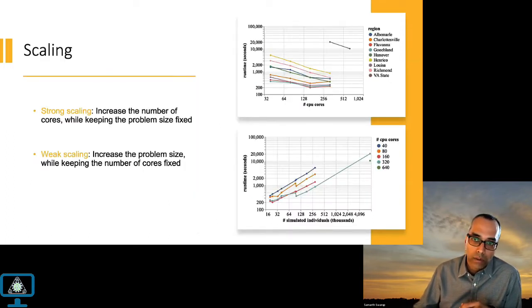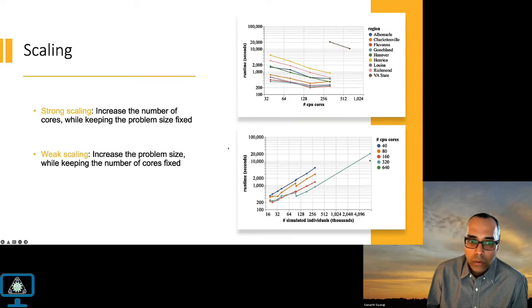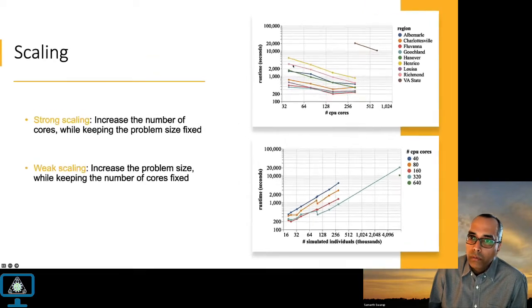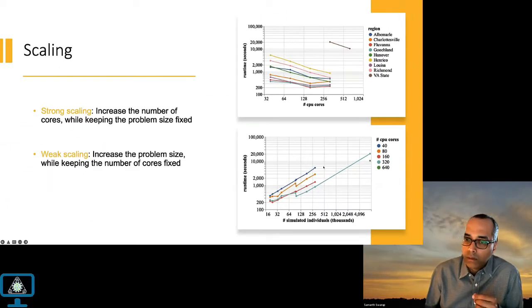We looked at how large a population we can simulate with PANTHEM coupled with relatively heavy BDI agent models. We show both strong and weak scaling. Strong scaling keeps problem size fixed while increasing computational resources, showing reasonable runtime reductions across different counties on a log-log scale. The far right points are for the full population of Virginia — close to 8 million agents. Practically, for calibration in reasonable time, we worked with a population of 12 counties.